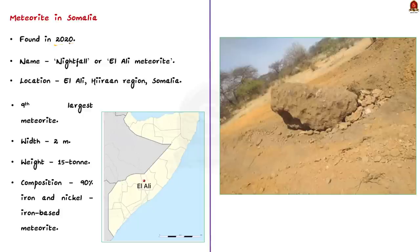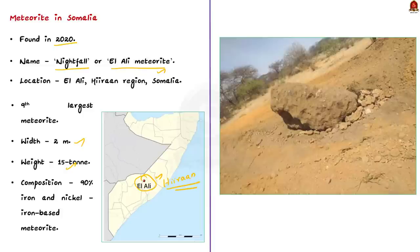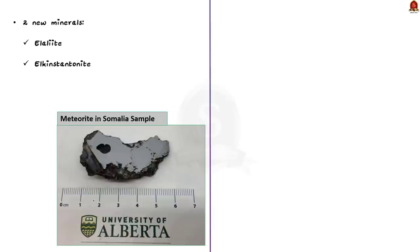This meteorite was found in 2020. It has two names: the locals call it 'Nightfall,' but scientists call it the LLE meteorite because it was found near the town of LLE in the Hiran region of Somalia. It is the ninth largest meteorite ever recorded, over two meters wide, and weighs 15 tons. It is an iron-based meteorite — about 90% iron and nickel. After analyzing a sample, scientists found two new minerals: one named Elaliite and the other named Elkin-Stantonite, named after NASA principal investigator Miss Lindy Elkin-Stanton. Further research may reveal more new minerals.